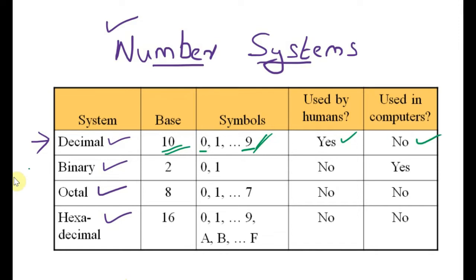The second type of number system is the binary number system. In the case of the binary number system, there are only two symbols: 0 and 1. In the decimal number system we had 10 symbols, but in the binary number system we have only two symbols, 0 and 1. Since there are only two symbols, the base is 2. The number of symbols is the base. This binary number system is not used by humans, but it is used by computers. So, the decimal number system is used by humans and the binary number system is used by computers.